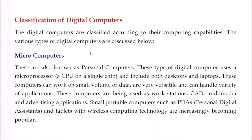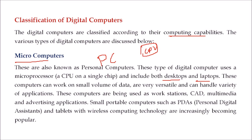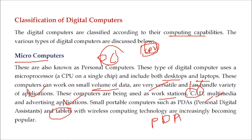The classification of digital computers — according to their computing capabilities — can be divided as follows. First, microcomputers, also known as personal computers. These use a microprocessor — that is, CPU — on a single chip. Desktops and laptops are all microcomputers. These work very well with small volumes of data, are very versatile, and can run a variety of applications. They are used as workstations, for CAD — computer-aided design — multimedia, and advertising applications. PDAs — personal digital assistants — and tablets with wireless computing technology are also popular nowadays.